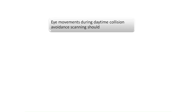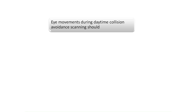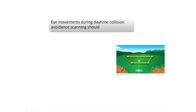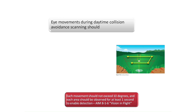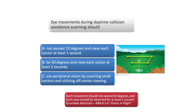Eye movements during daytime collision avoidance scanning should not exceed 10 degrees in view, covering each sector of the sky for at least one second, according to Chapter 8 of the Aeronautical Information Manual. Pilots should remember to practice see-and-avoid techniques to avoid mid-air collisions. Most mid-air collisions occur during the daytime with clear visibility, which is another question you may be asked on the private pilot written exam.